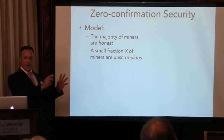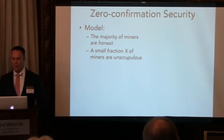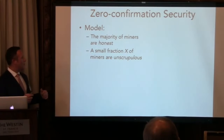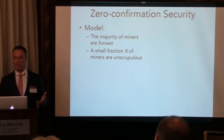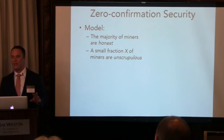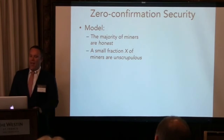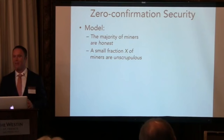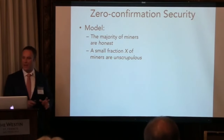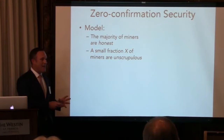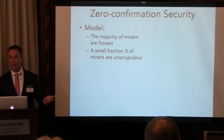Moving on to property number two: zero-confirmation security. To analyze this, we need a model. My model assumes that the majority of miners are honest — meaning they follow the protocol obediently. We also assume that a small fraction x of miners are unscrupulous, meaning they will deviate from the protocol to facilitate double-spending attacks if they can earn extra profit by doing so.